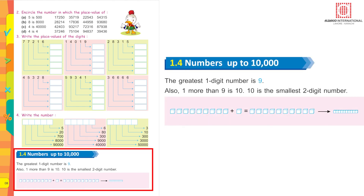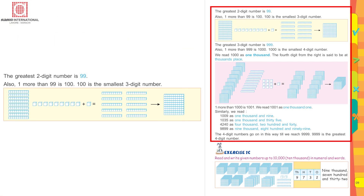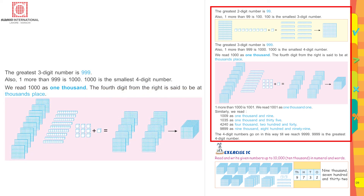Coming to numbers up to ten thousand. The greatest one-digit number is 9. One more than 9 is 10 — 10 is the smallest two-digit number. The greatest two-digit number is 99. If we add 1 to 99, it becomes 100, which is the smallest three-digit number. The greatest three-digit number is 999. The fourth digit from the right is said to be at the thousands place.